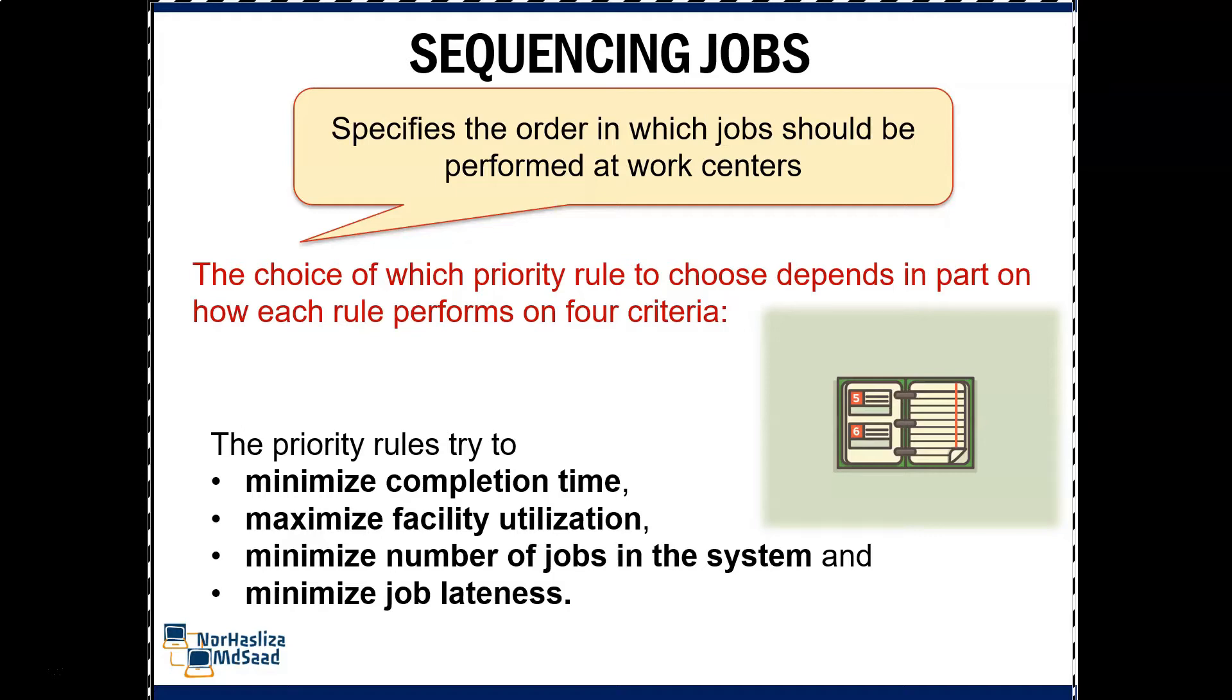The priority rules try to minimize completion time, maximize facility utilization, minimize number of jobs in the system, and minimize job lateness.